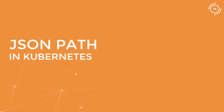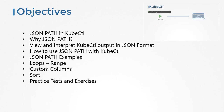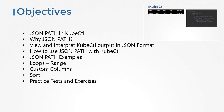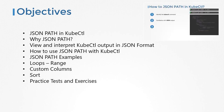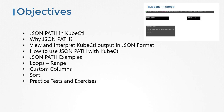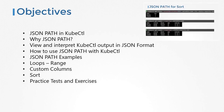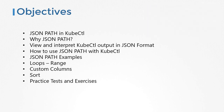Hello and welcome to this demo. My name is Mumshad Manambath. In this video, we will look at how to use JSON path in Kubernetes with the kubectl utility. We will start by discussing why you might want to use JSON path in the first place. We will then look at viewing and interpreting kubectl output in JSON format. We will then look at the different steps involved in using JSON path with kubectl, several JSON path examples, loops, and finally custom columns and sort functionality of kubectl.